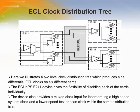The clock distribution in an ECL system is a relatively trivial matter. In this slide, we show a two-level clock distribution tree which produces nine differential ECL clocks on six different cards. The devices also provide a multiplex clock input for incorporating a high-speed system clock and a low-speed test or scan clock within the same distribution tree. The ECLNPS E111 device is used to receive the signals from the backplane and distribute it on the card. The worst-case skew between all 54 clocks in this situation would be 275 picoseconds, assuming that all loads and signal traces are equalized.